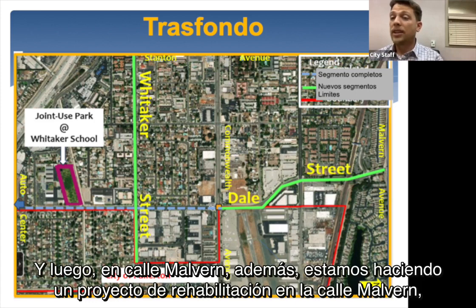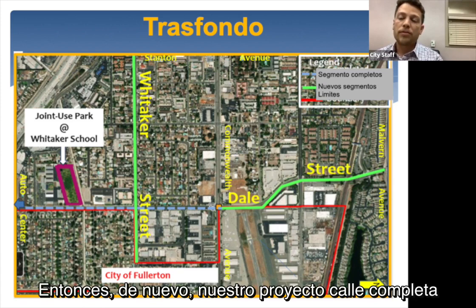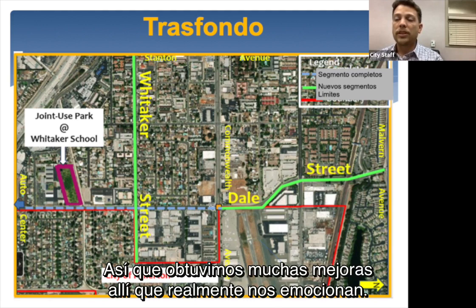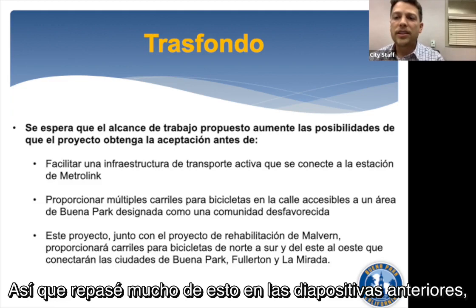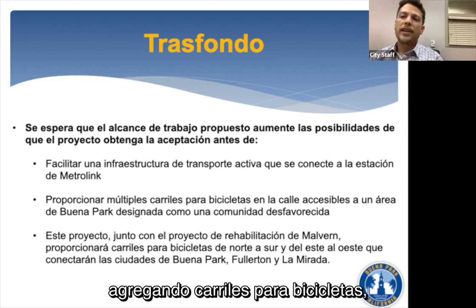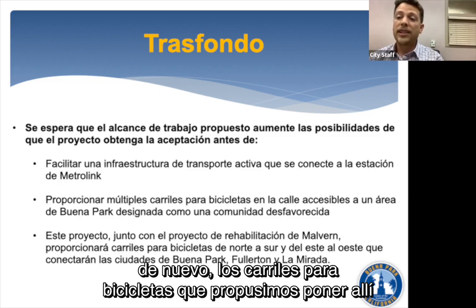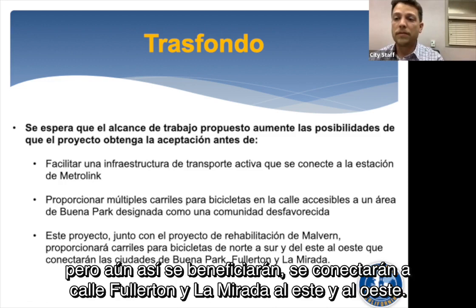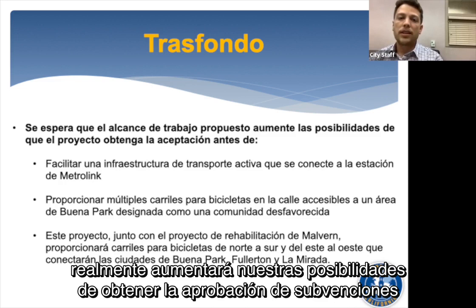On Malvern, we are doing a rehabilitation project currently in design, and we will be adding bike lanes to Malvern wherever we can, so our complete street project will connect to those bike lanes. A lot of commuters could use bikes, scooters, or walk to the MetroLink station. The area of Point of Park is designated as a disadvantaged community. These additions will really increase our chances of getting grant funding — it's a much stronger project now.